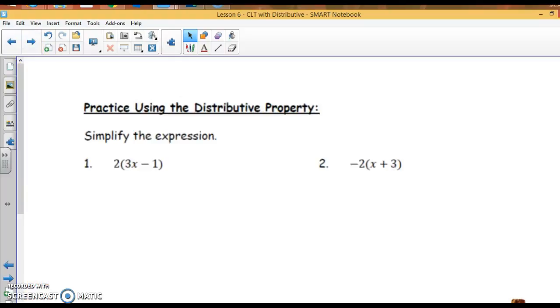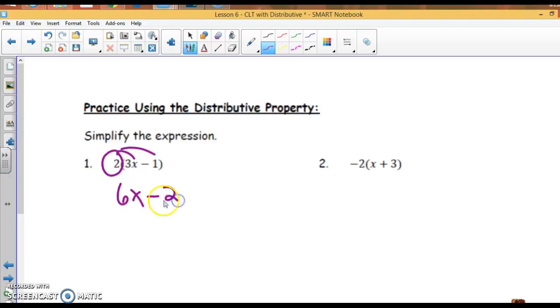Let's review the distributive property. So, 2 times the quantity 3x plus 1. I'm going to distribute the 2. 2 times 3x is 6x. Positive 2 times negative 1 is minus 2, so negative 2. 6x minus 2.